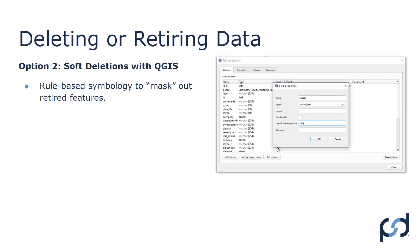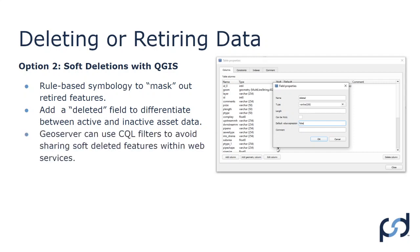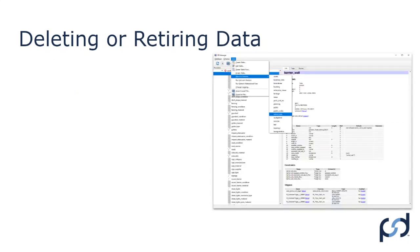With rule-based symbology, if there's a manhole we don't want to appear on a map, we use rule-based logic to eliminate it — create a list and say any ID within this list, don't display it on the map. We add a 'deleted' field to differentiate between active and inactive asset data. It's a simple varchar field with a default value of false; if true, it means the record is deleted. When serving data through GeoServer, you can use a CQL filter to avoid sharing soft-deleted features within the web service — there's actually an option to configure that when setting up the layer.